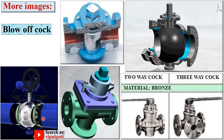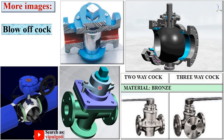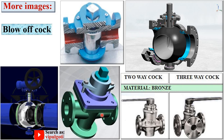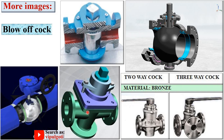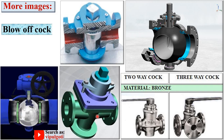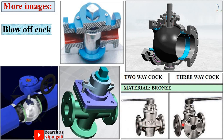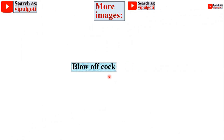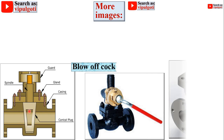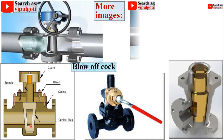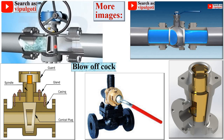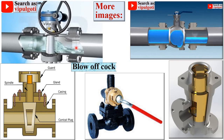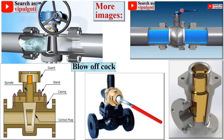This is the 3D figure of the blow-off cock created in modeling software. With the help of this lever, or valve, you can turn it to open or close the blow-off cock when desired. Here you can see a two-way cock and a three-way cock. This is the color figure of the blow-off cock showing the conical plug in which the hole is provided, and here you can see exactly the animation — in the closed condition the hole is not aligned, and when the hole comes in line with the pipe it opens.